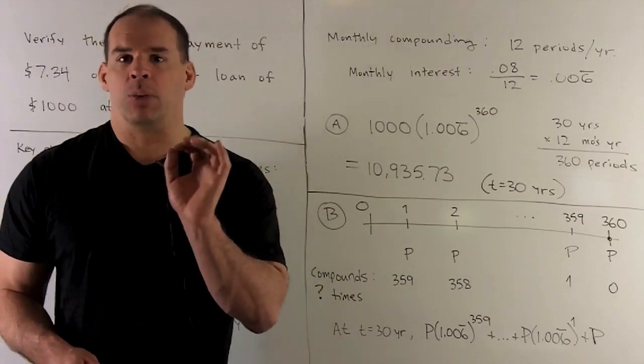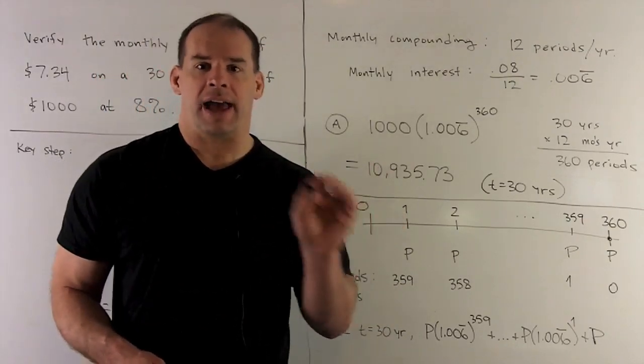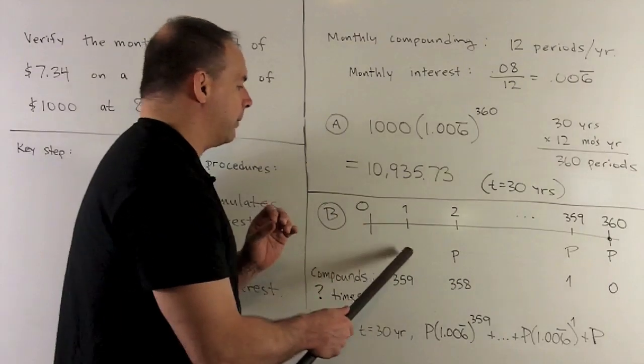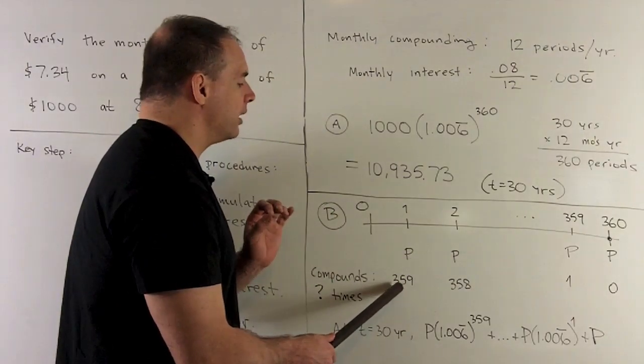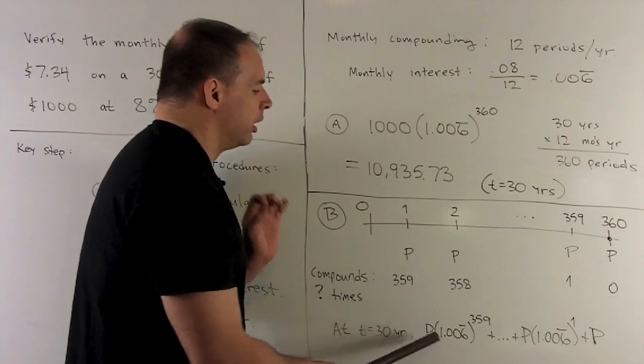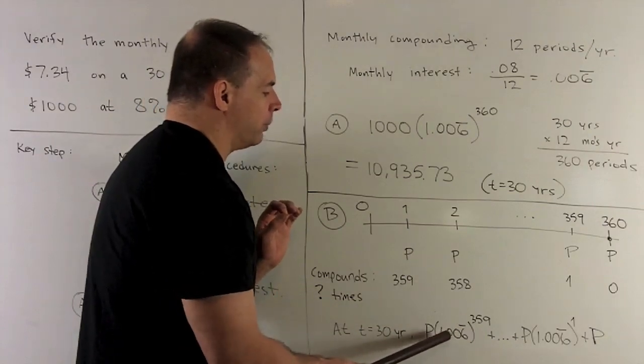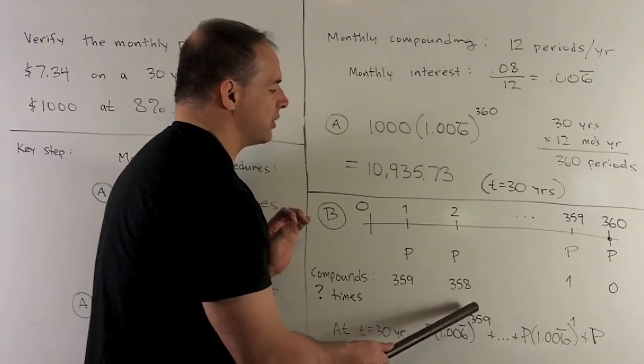Now, what's that going to be worth altogether at T equals 360? We take our payment. How many times do we compound? That's going to be the exponent over our interest factor. 1.006 repeating raised to the 359.